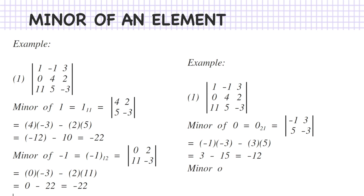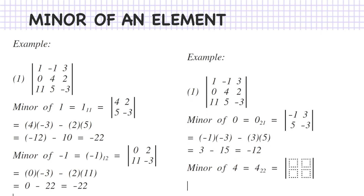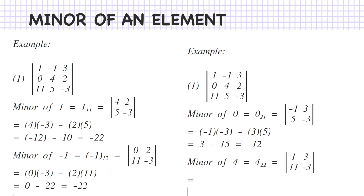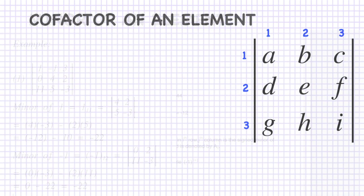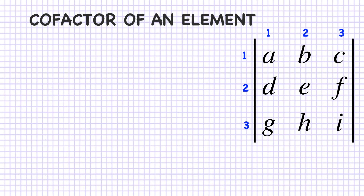For the minor of element 4 (row 2, column 2), M₂₂, it is the determinant of 1, 3, 11, minus 3. The value is 1 times minus 3 minus 3 times 11, which is minus 3 minus 33, equals minus 36.